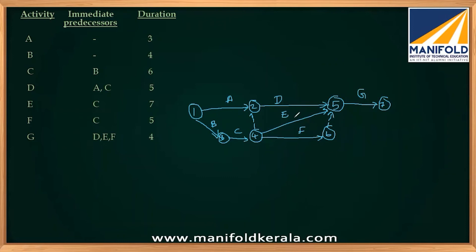This now satisfies all the relations — for G, the immediate predecessors are D, E, and F. The durations can be represented along with the activity labels: A is 3, B is 4, C is 6, D is 5, E is 7, F is 5, G is 4. The dummy activities have duration zero. This is how you construct the network.